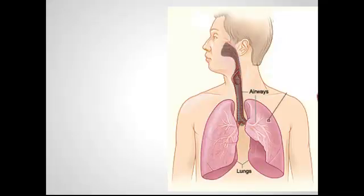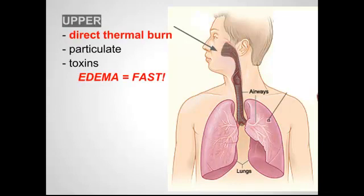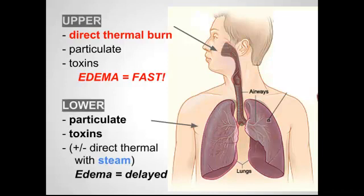In thinking about the injuries sustained, you want to divide it up into the upper airway and lower airway. Starting with the upper airway, that's where you're going to have the direct thermal burns, causing fast edema that happens right there in the ER while you're watching them. In the lower airway, you have more of the particulate and toxin effects, which are very irritating and cause edema, but it's much more delayed within the next 24 hours. Direct thermal burns to the lower airway are more common with steam injuries, so a little less common in house fires.